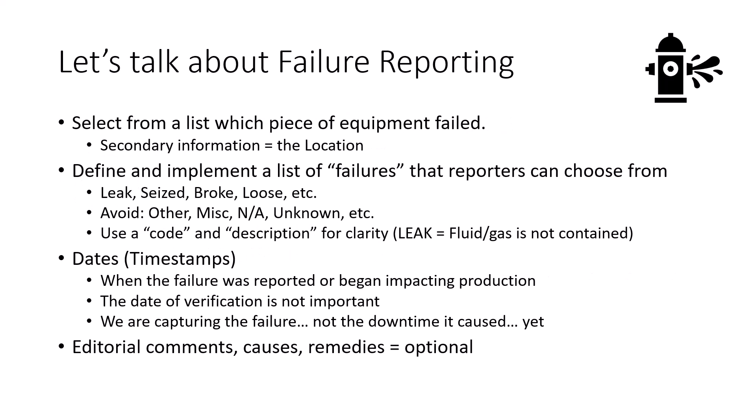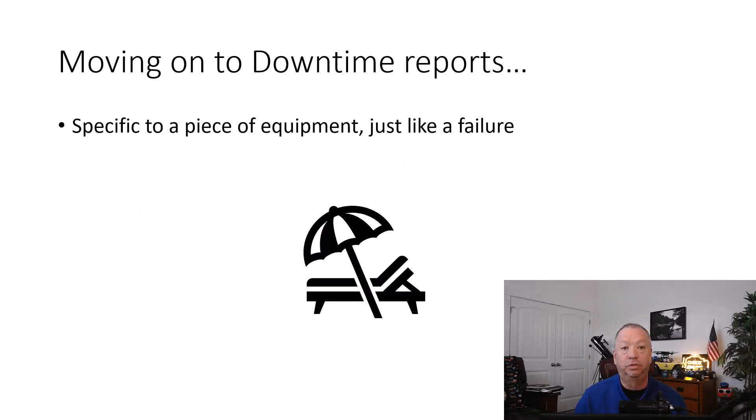Dates are very important. Specifically, knowing the timestamp — date and time — that a failure was reported or began to impact production is the most critical. While it might be nice to have a failure report go through a verification process, assuming the failure was real, knowing when it happened is key. Editorial comments, logs, and other information can be useful but are not necessarily required. Failure reports are just that: what failed, how, and when. That's all they need to be.